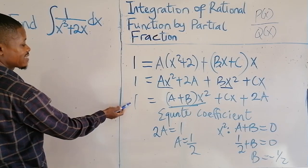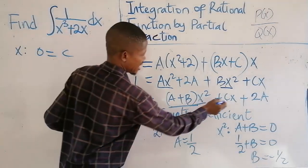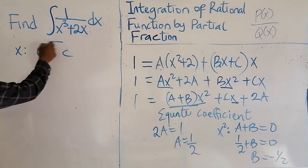Equate the X coefficients. On the left, we don't have X there. Equate the X coefficients. So we have zero equal to C. This is C. The coefficient of X is C. So C is zero.